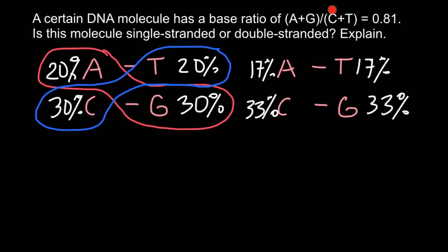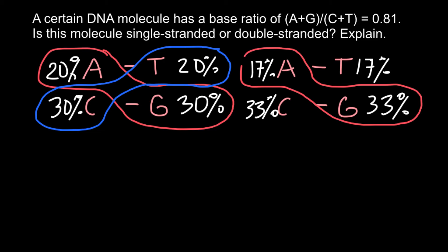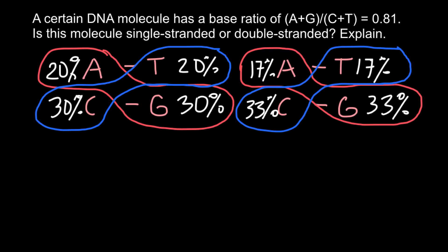So we would have 50 divided by 50, which equals 1. Any number divided by itself is going to be 1. But here we see 0.81, not 1. This tells us that this is not double-stranded DNA, but single-stranded DNA.